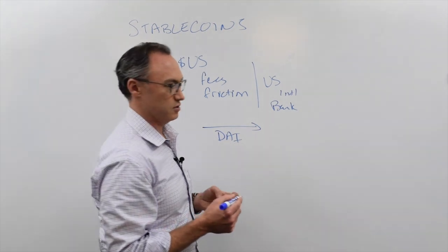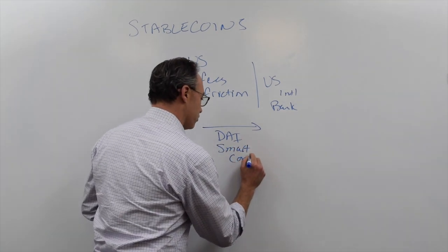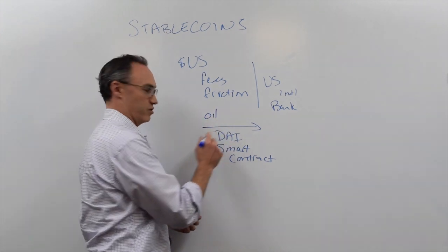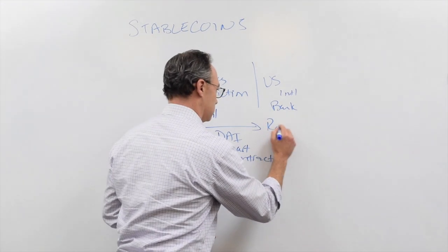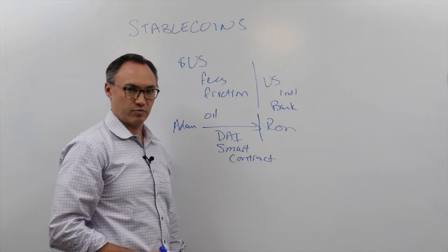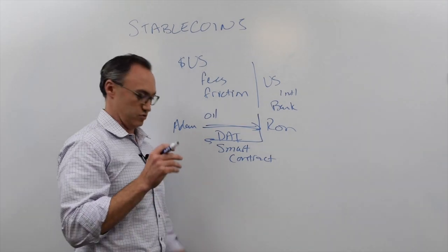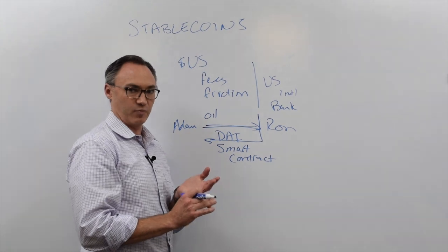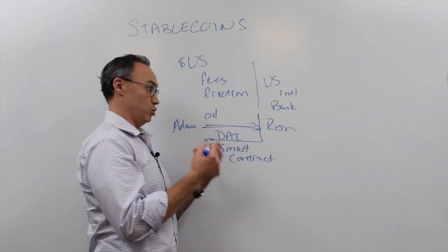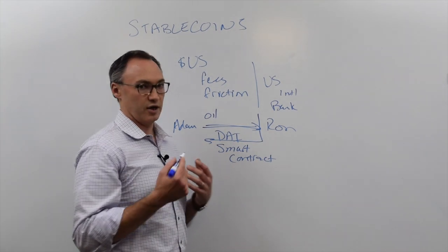Another reason we want it to be a cryptocurrency is because if it's a cryptocurrency, we can wrap it in a smart contract. For example, Adam is going to ship Ron some oil. He puts it on a shipping container, and as soon as it arrives, a device triggers a smart contract that pays Adam in DAI right away. There are no invoices, no waiting 90 days for payment, no checks, no accounts payable or receivable. This all happens programmatically — and the only way it can happen is using a stablecoin within a smart contract.